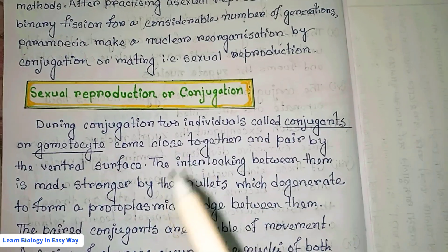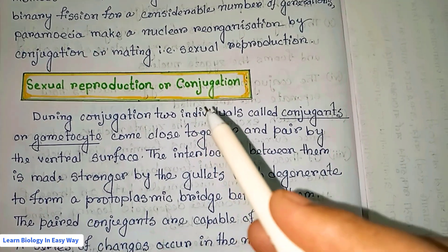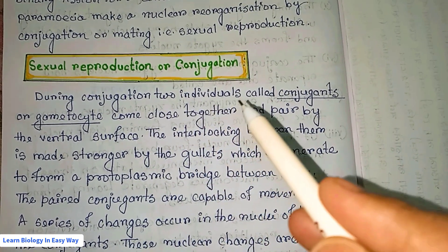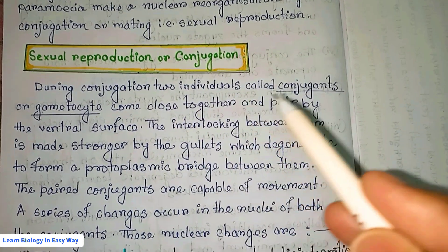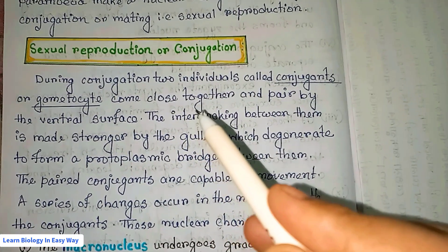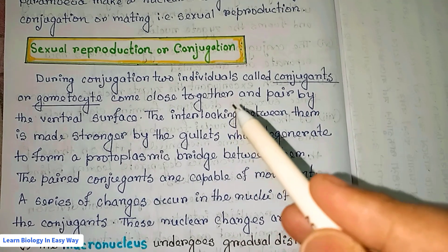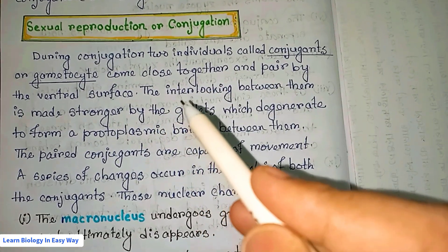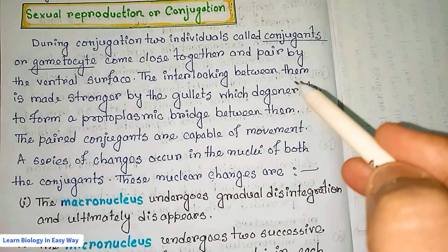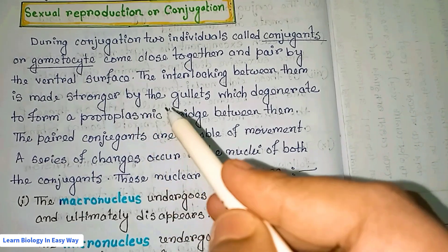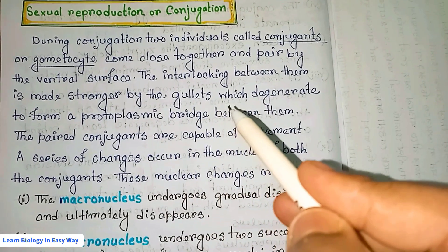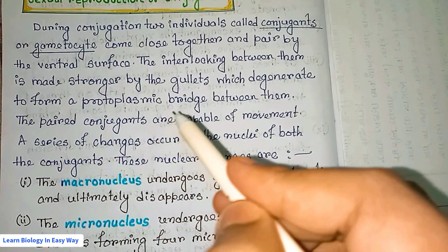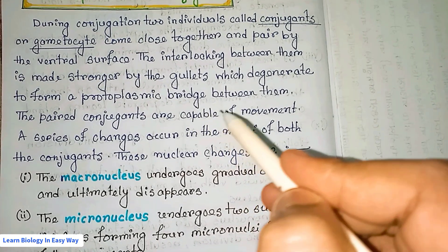During conjugation, two individuals called conjugants or gametocytes come close together and pair by the ventral surface. The interlocking between them is made stronger by the gallets, which degenerate to form a protoplasmic bridge between them.